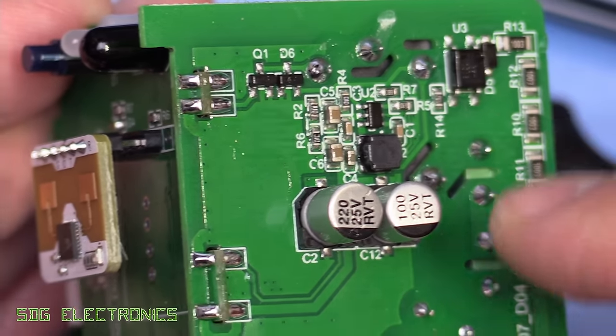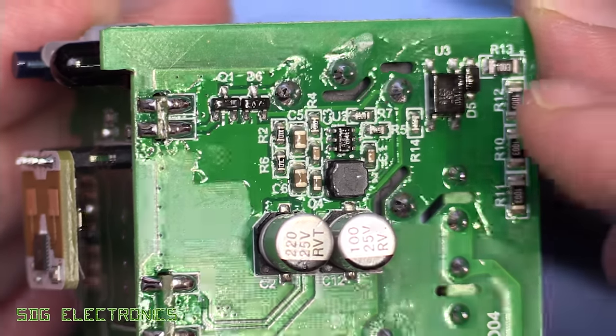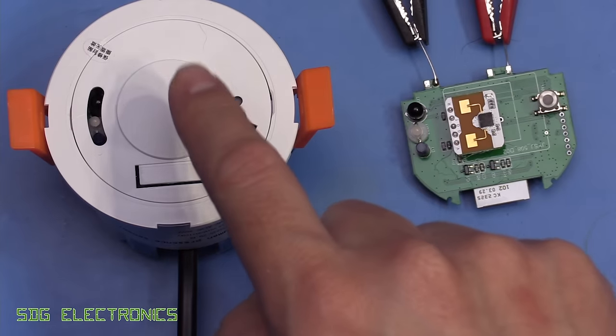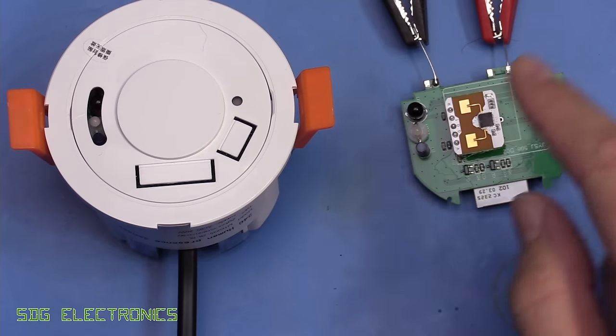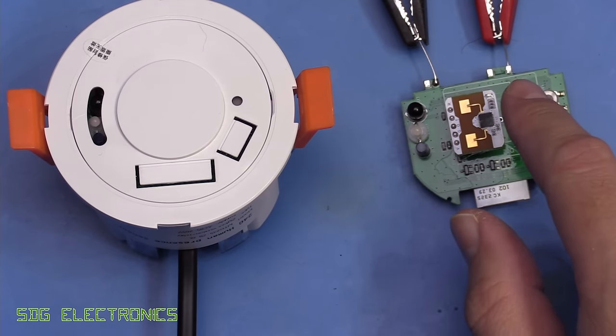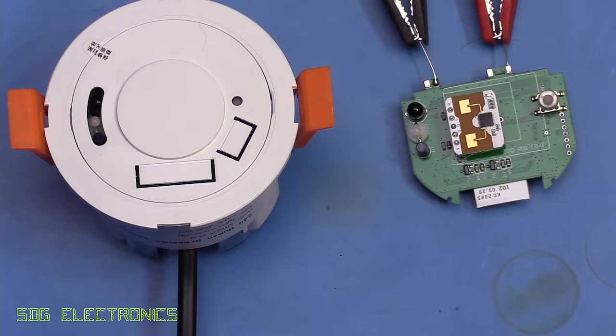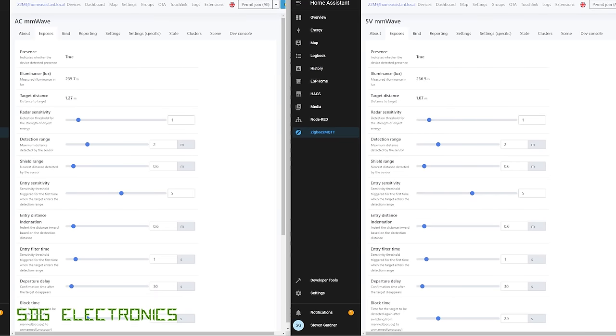We've got the pair of them connected up here. One is connected to mains as it would be fresh out the box, and this one is powered from five volts. In Home Assistant we've got the two units - one labelled AC millimeter wave and the other five volt millimeter wave. I found that these units weren't picked up properly by ZHA, so you have to use Zigbee to MQTT unless you want to write a driver for it.